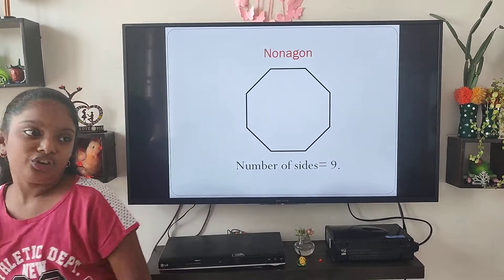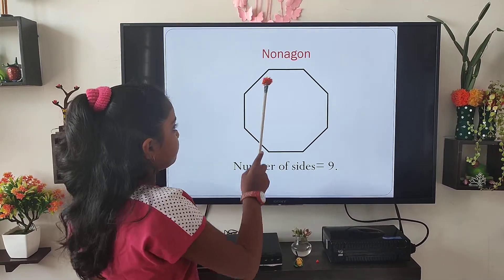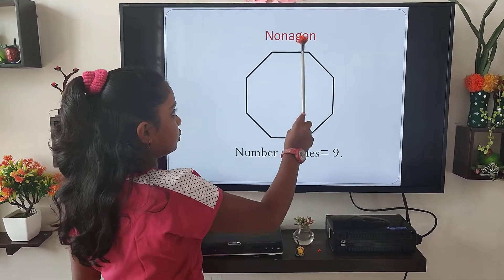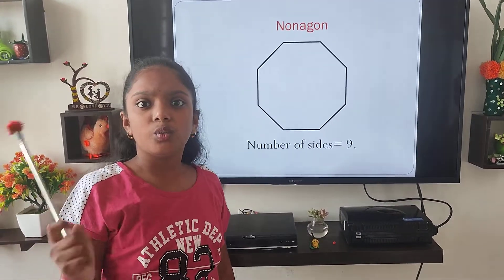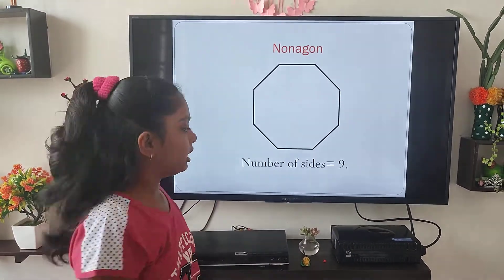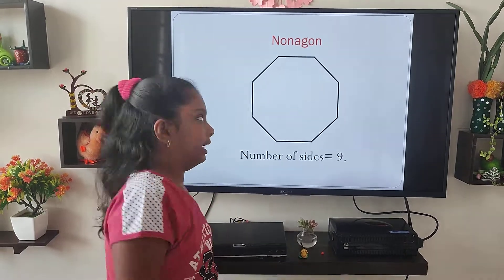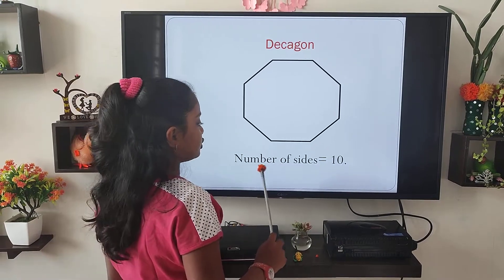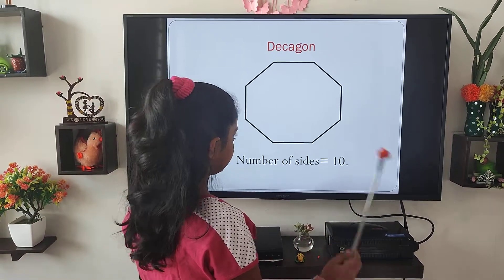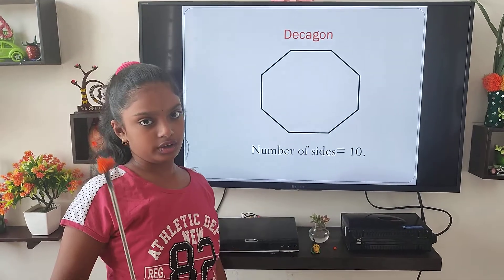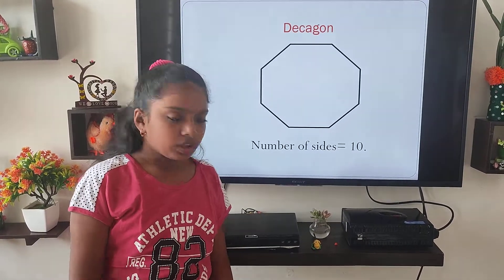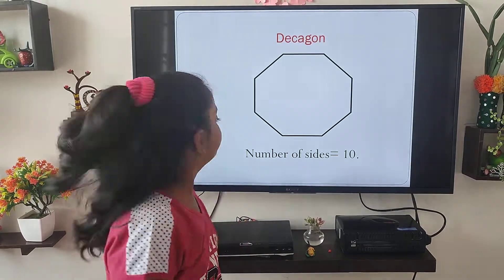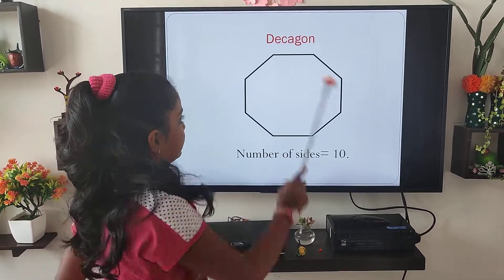Next is nonagon — a shape which has nine sides is called a nonagon. The word nonagon starts with the letter N, and nine also starts with the letter N. Next is decagon — a shape which has ten sides is known as a decagon. Ten years is one decade, so you can remember it as 'deca.'